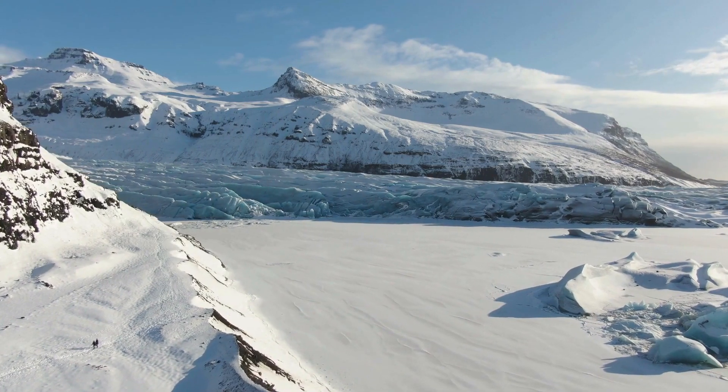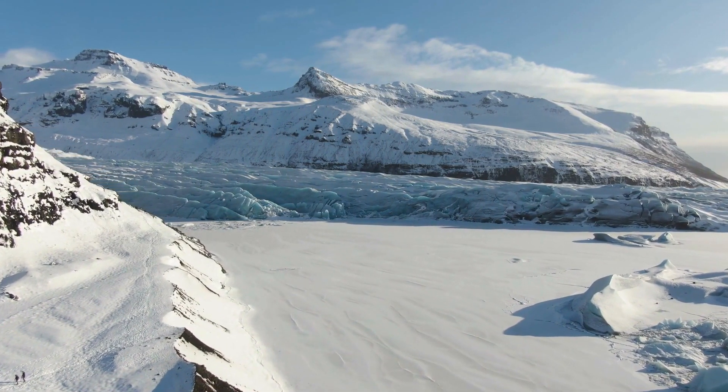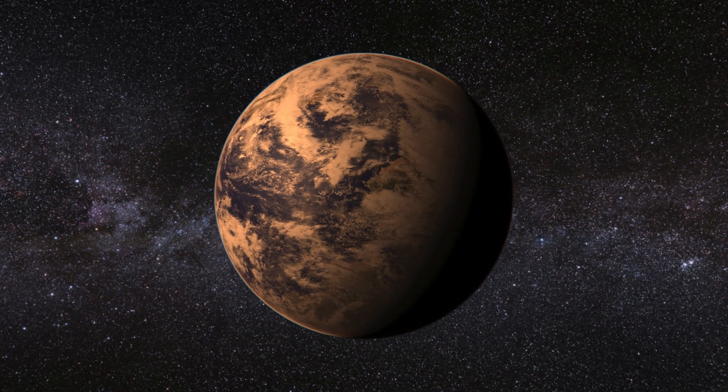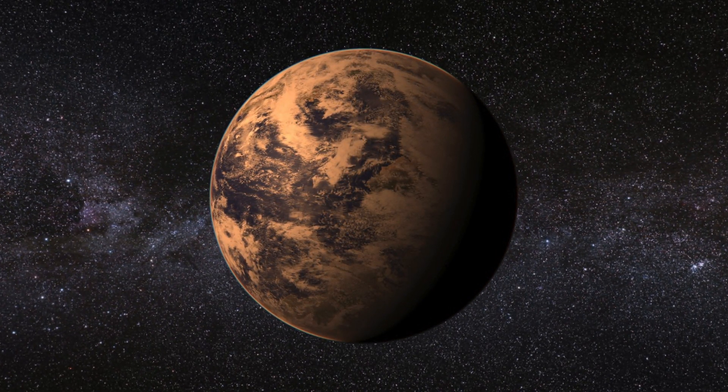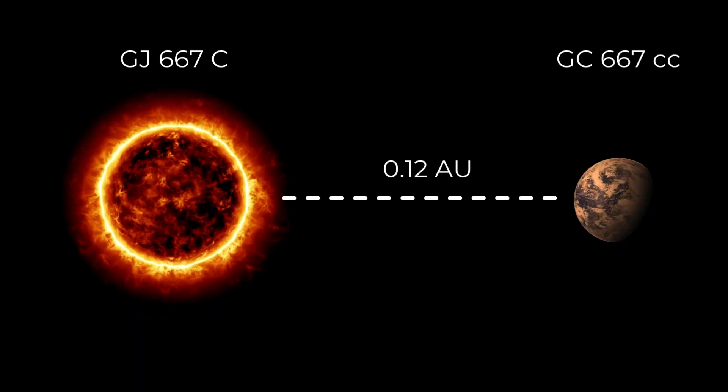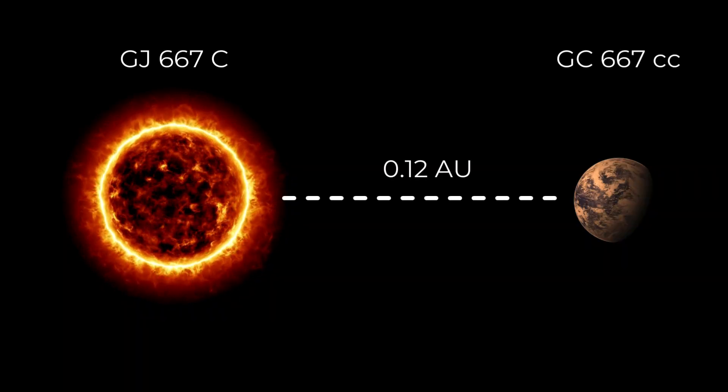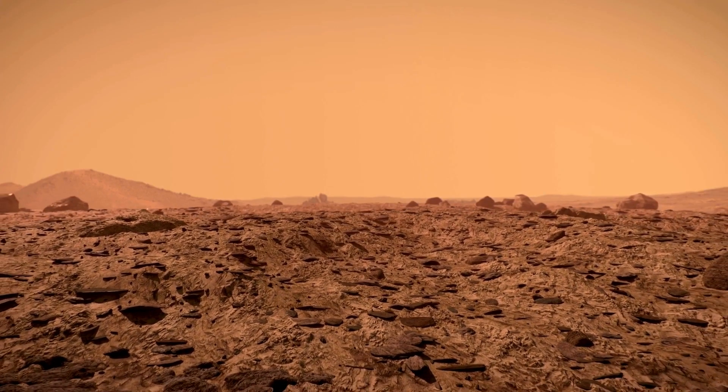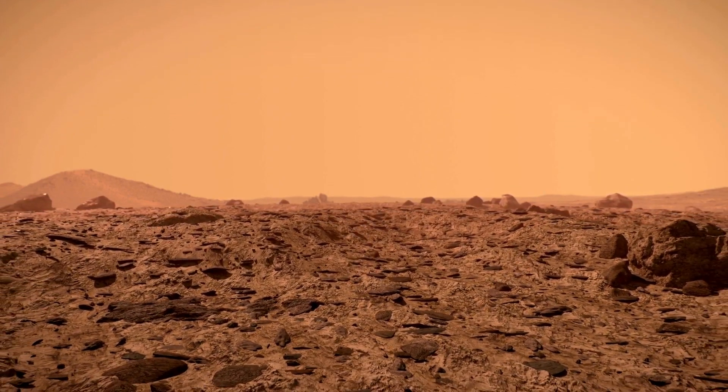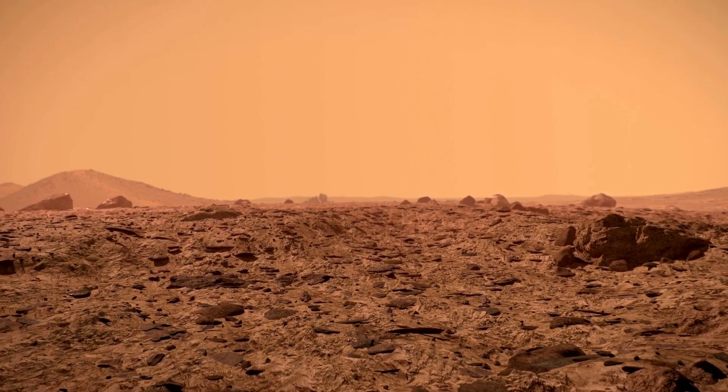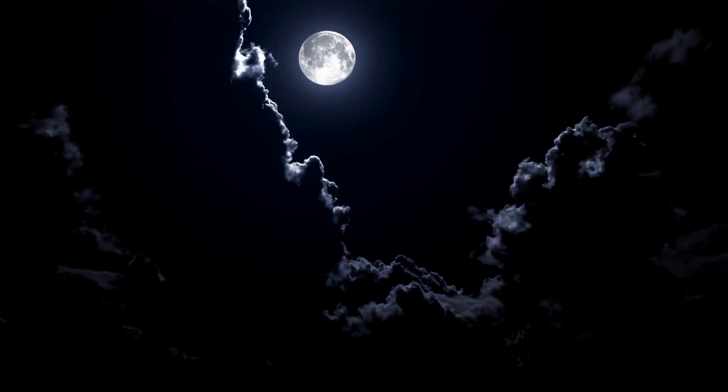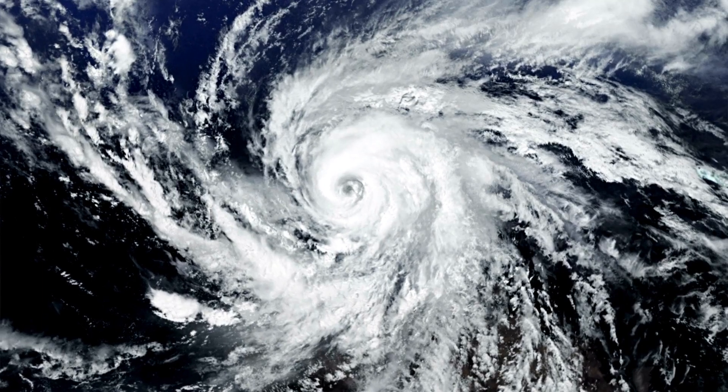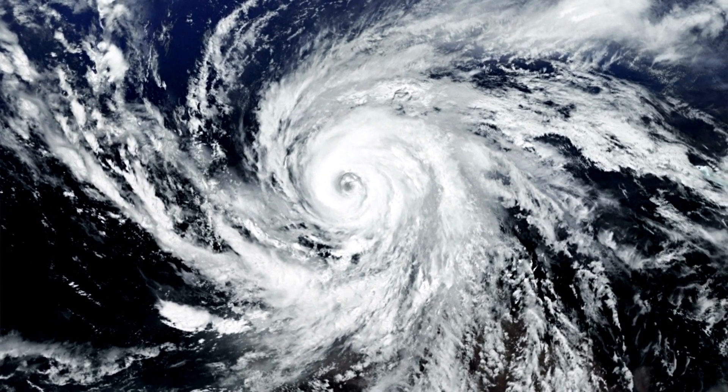If our planet circled star C at that proximity, it would become an icy world. GJ 667CC, however, orbits its parent star at a mere 0.12 AU, completing its journey around the red dwarf every 28 days. The proximity suggests likely tidal locking, with one side experiencing perpetual day and the other eternal night, inducing substantial temperature disparities that likely influence the global climate on the exoplanet.